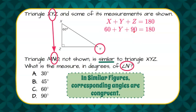We add like terms, 60 plus 90 is 150. Subtract 150 from each side of the equation, and we get that Y is equal to 30.